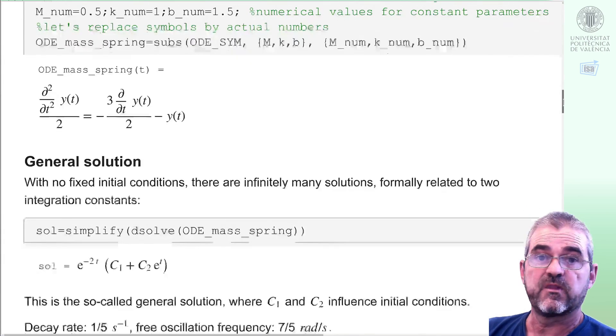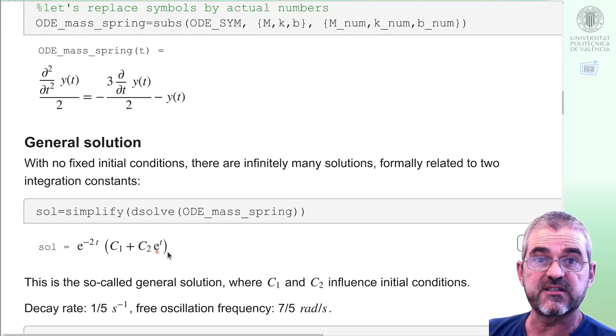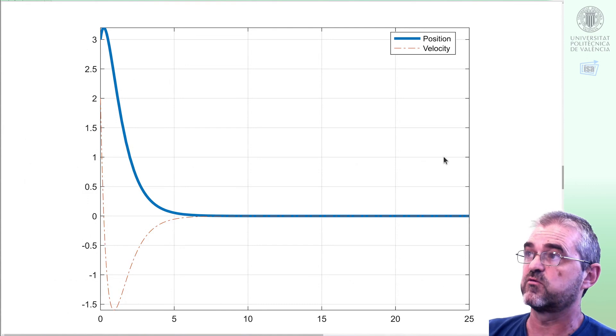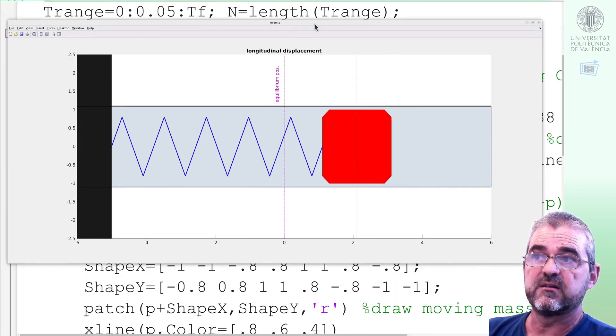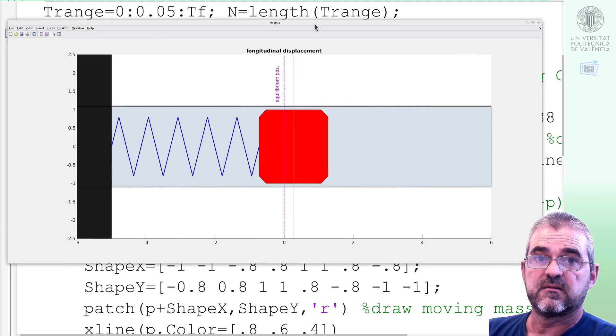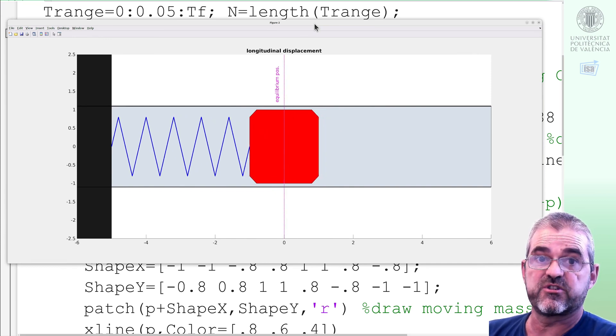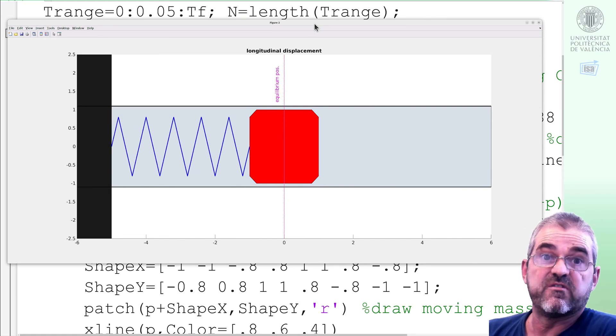This is what's called the overdamped case. And the simulation plots are no longer oscillatory. And of course, the animation will quickly stop without oscillations at the equilibrium position. This is the overdamped response in second order systems. So we'll finish with this.